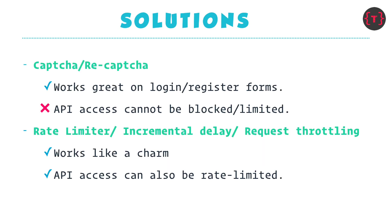What are the solutions to mitigate a DoS attack, brute force attack, or DDoS attack? First, we have CAPTCHA and reCAPTCHA — the 'I am not a robot' verification — which works great for login and register forms. However, CAPTCHA doesn't work for an API because there's no image to verify; requests are dynamically sent. For APIs, we can use a rate limiter, alternatively known as incremental delay or request throttling, which can block and rate limit API access.